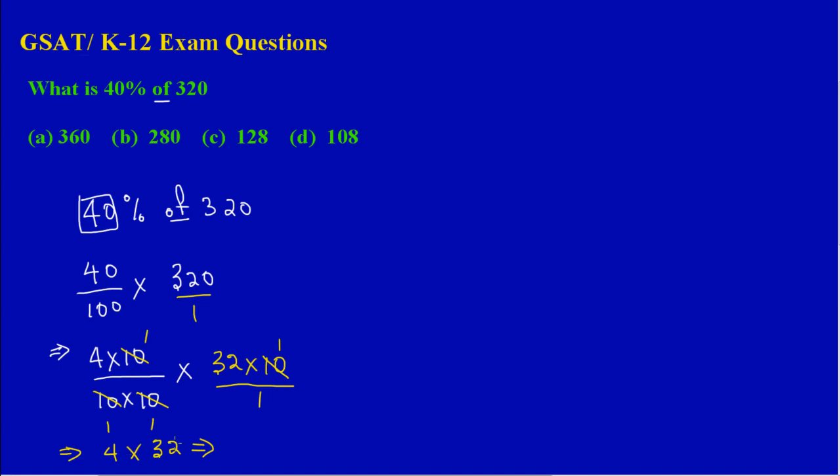4 times 2 gives 8, and 4 times 3 gives 12, so that's 128. By process of elimination, A would be out, B would be out, so our answer is C.